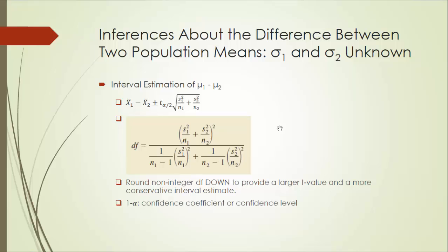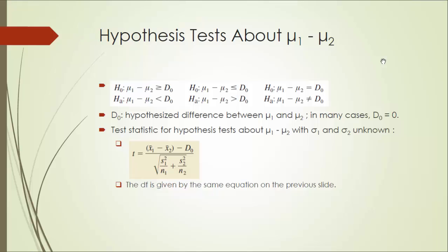Next, let's take a look at the hypothesis testing. Once again, there are three forms of hypothesis test about the difference between two population means: lower-tailed test, upper-tailed test, and two-tailed test. Once again, D0 is the hypothesized difference between two population means. In most cases, D0 is zero.